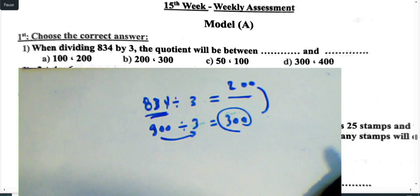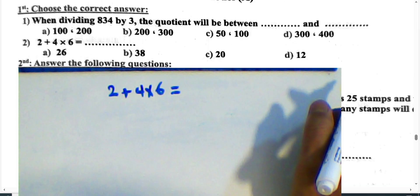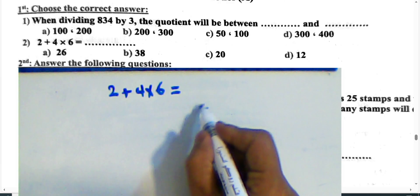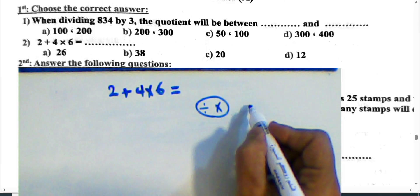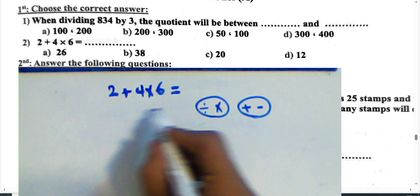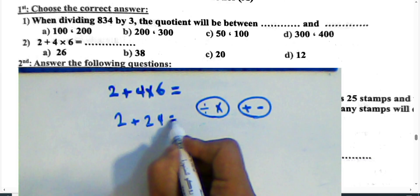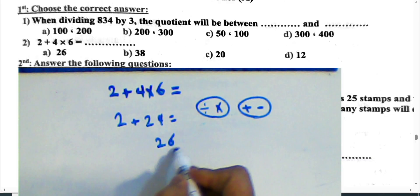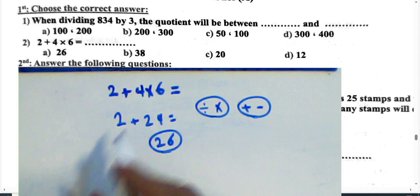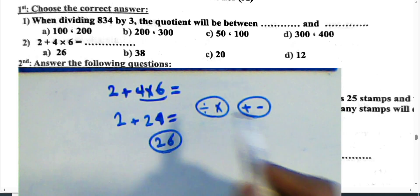Question 2: Find the result of 2 plus 4 times 6. Using order of operations, do multiplication first: 4 times 6 equals 24, then 2 plus 24 equals 26. The answer is 26. Choose letter A.